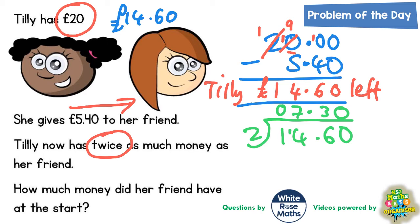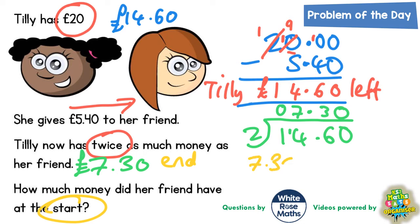So her friend must actually have £7.30, but this is after Tilly has given her the money. The question asks how much money did her friend have at the start, and this £7.30 is at the end. So we need to take the £7.30 and subtract the £5.40 that she was given. 3 take away 4 we can't do, so borrow — 7 becomes 6 and the one we borrowed makes 13. 13 take away 4 is 9, and 6 take away 5 is 1. So she must have had £1.90 at the start. The final answer is £1.90.